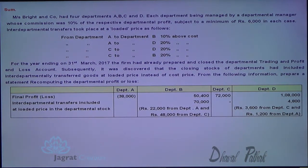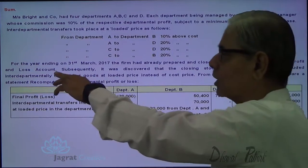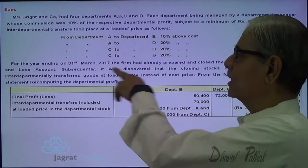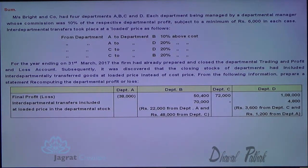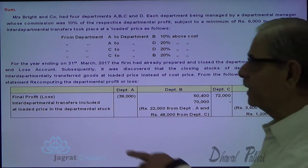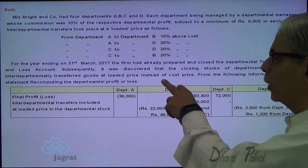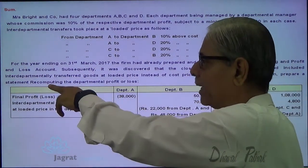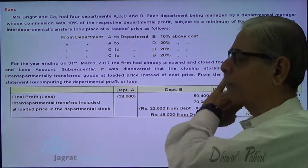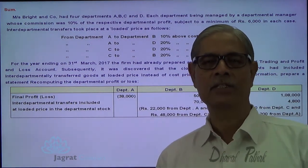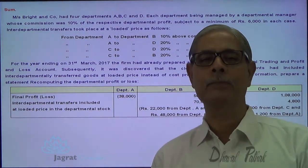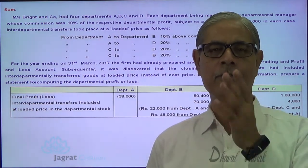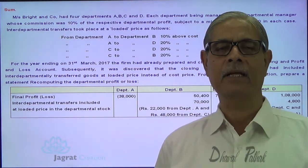For the year ended 31st March 2007, the firm had already prepared and closed the departmental trading and profit and loss accounts. Subsequently, it was discovered that the closing stock of departments included inter-departmentally transferred goods at loaded prices instead of cost prices. So, in light of unrealized profit, we are required to make changes to the profit.